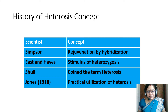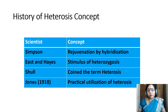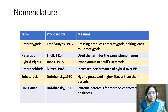Let us see some scientists and their concepts. Simpson gave the concept of rejuvenation by hybridization. East and Hayes gave the concept of stimulus of heterozygosis. Shull coined the term heterosis, and Jones in 1880 gave the practical utilization of heterosis.